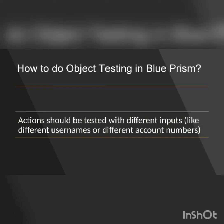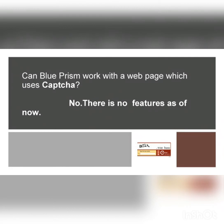Object testing is all about actions. We have to test actions with different inputs like different account numbers and different usernames. Another kind of testing in Blue Prism involves highlighting attributes of whichever elements you spy — you can highlight them and that kind of testing has to be done as well.